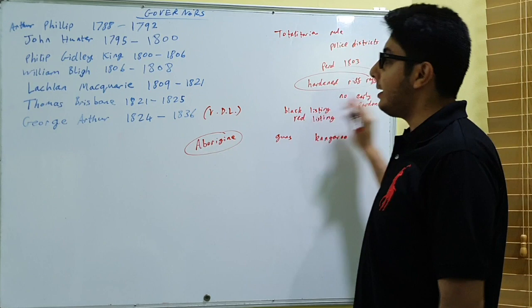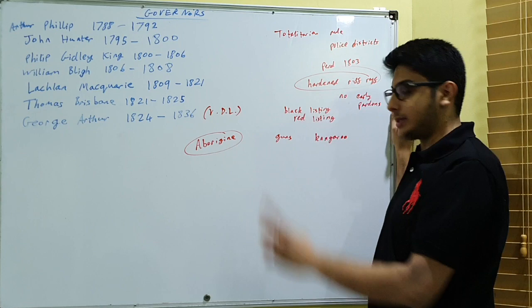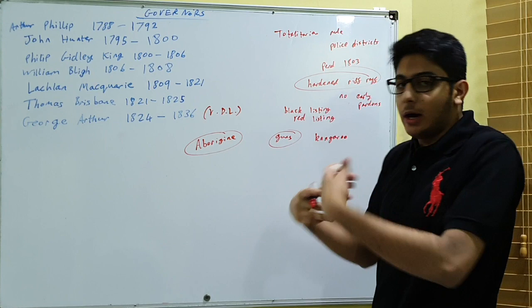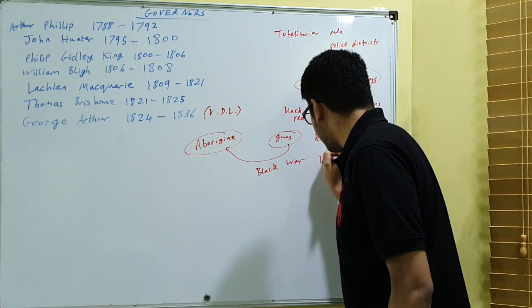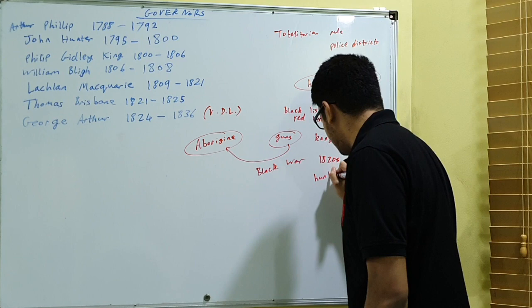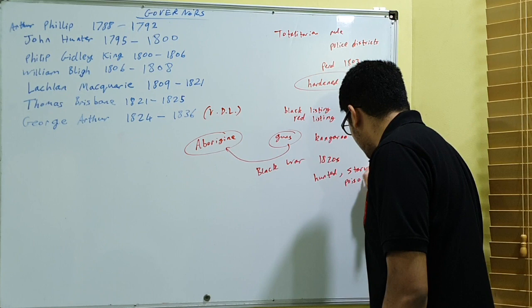So this basically created a class of uncontrolled and armed bush wranglers, which basically initiated something called the Black War, which was at its highest intensity in the 1820s, where aborigines were hunted, starved, and poisoned until they were driven out or wiped out completely.